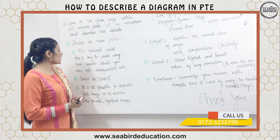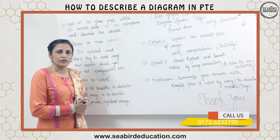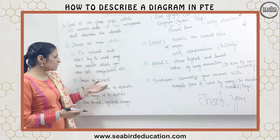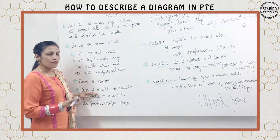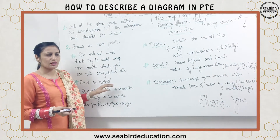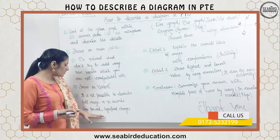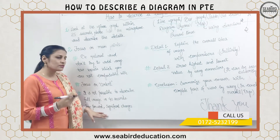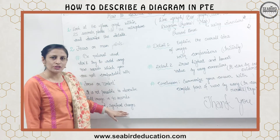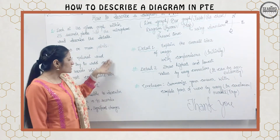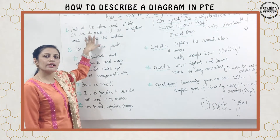Also, do not try to add any new words which you are not comfortable with. After that, focus on the main content of the diagram. Obviously, it is not possible to describe the entire information within 40 seconds. And lastly, work on the time period that is provided in the diagram and significant changes. These are things you need to analyze within the 25 seconds of analyzation.